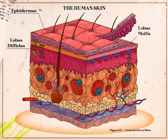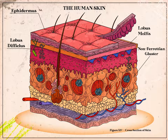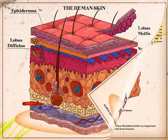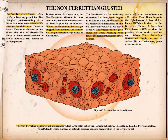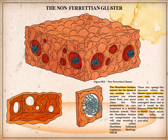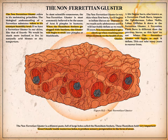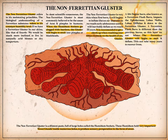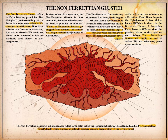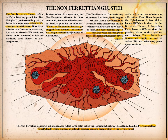The thick orange layer under the lobus is called the non-feretian gluster, a dilatant paste full of large holes called the hemidum sockets. The hemidum hold very important sweat glands inside numerous holes to produce sensory perspiration in the form of sweat.